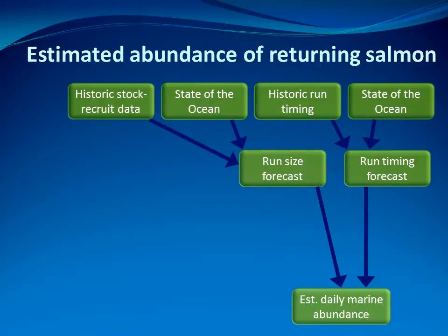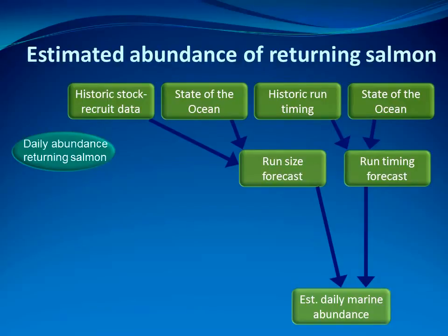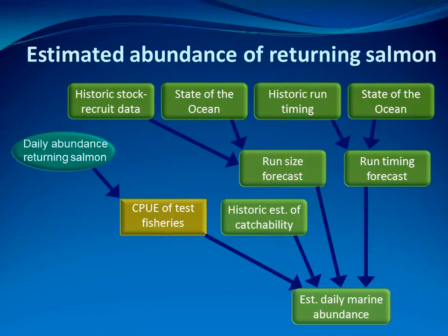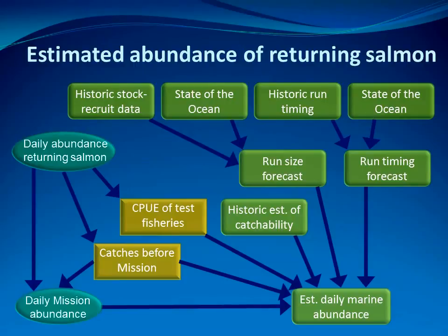The pre-season forecast on run size and timing allows predicting the daily marine abundance. This model prediction can be compared against the actual daily abundance of the returning salmon. Unfortunately, we do not have any directly observed data for this comparison. Instead, we have catch per unit effort data from the test fishery, which combined with a catchability estimate allows us to estimate the daily marine abundance in-season. The prior for the catchability coefficient is obtained from historic data. In addition to the catch per unit effort data, the model of daily marine abundance can also be fitted to daily river abundances obtained at Mission, once catches between the marine areas and Mission are taken into account.